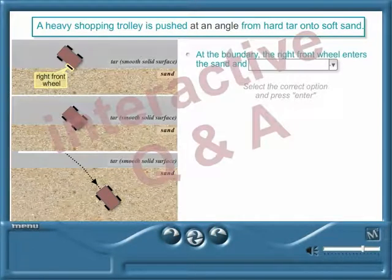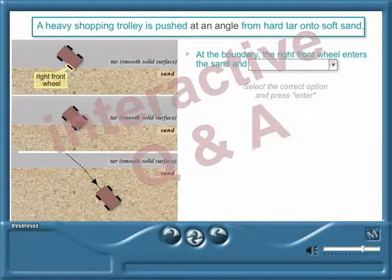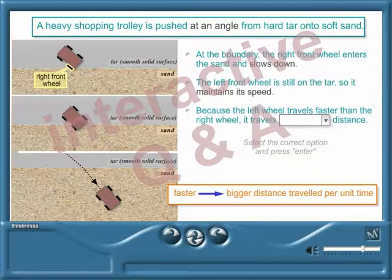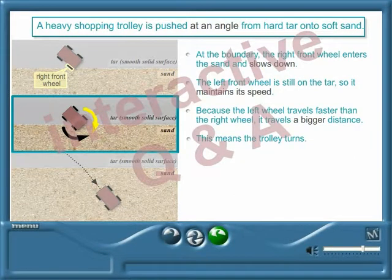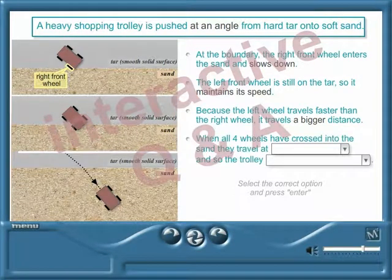At the boundary, the right front wheel enters the sand first. What happens to its motion? Wonderful! What happens when all four wheels have crossed into the sand? That's it!